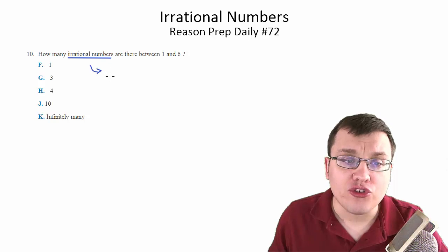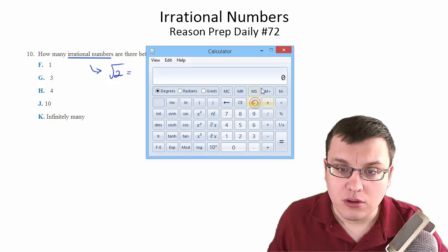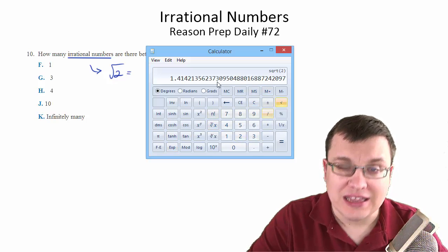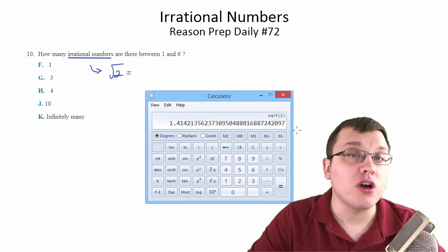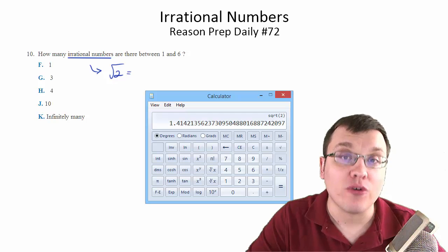So for example, the square root of 2, if you put that in your calculator, you'll get something that looks like this. Now this number actually goes on forever, 1.41421. This is a non-repeating decimal that goes on forever.